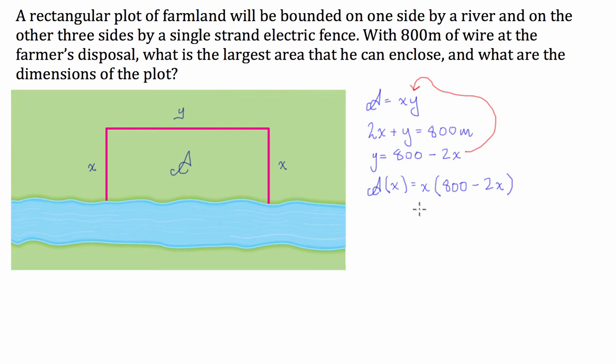What we're going to do next is we're going to multiply out that bracket to make the differential process easier. So we have area in terms of x is equal to 800x minus 2x squared.